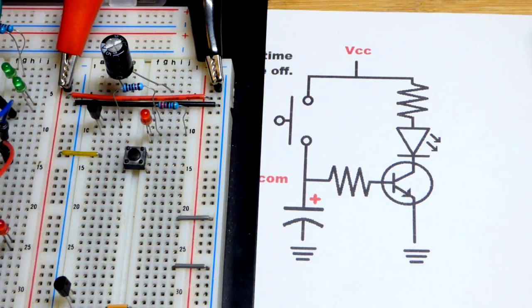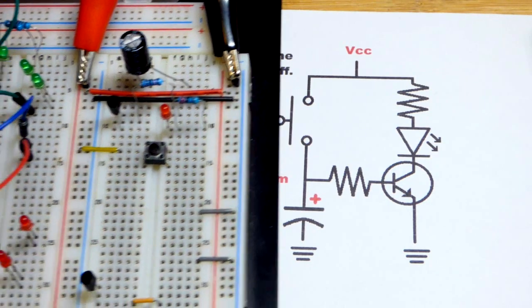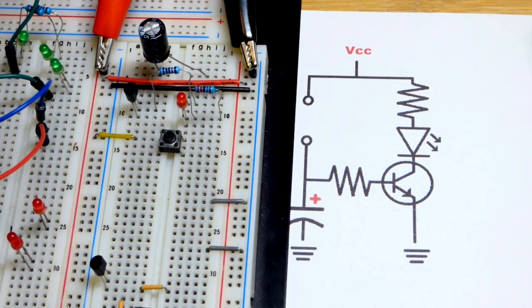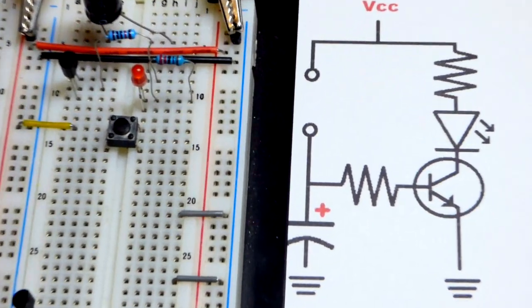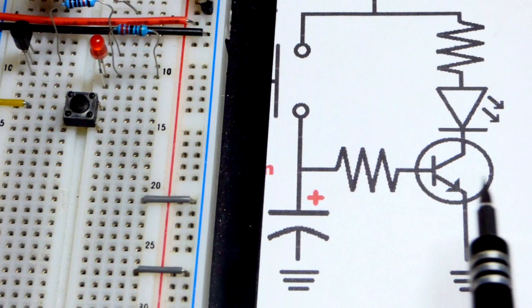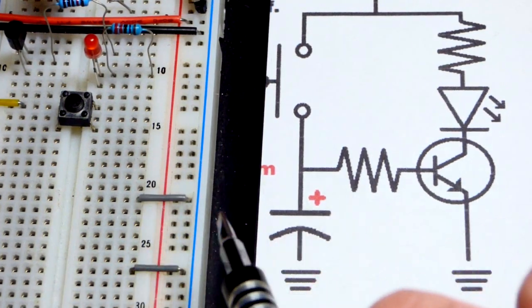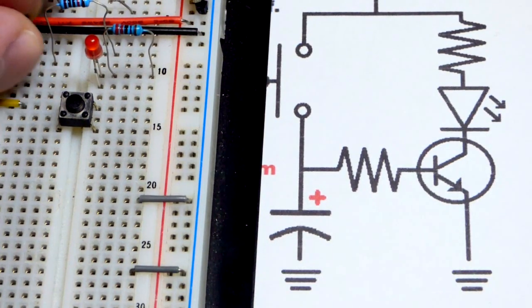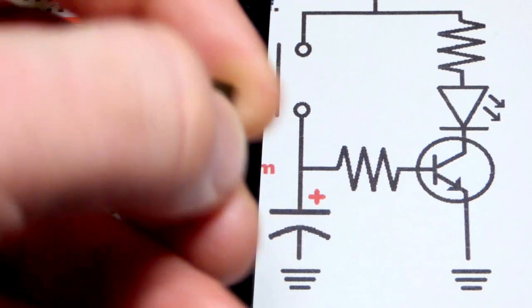We already have the switch right here to the positive rail, as you can see right there. And we're going to take a resistor. And actually, let's add the transistor first. So you can see here that the arrow there, the emitter, goes to the negative rail. I already have a jumper to the negative rail. This is a 2N3904.